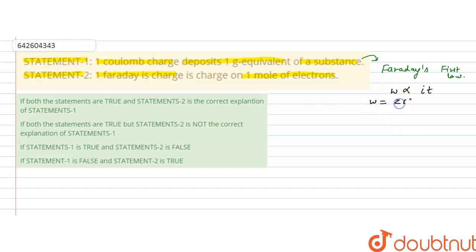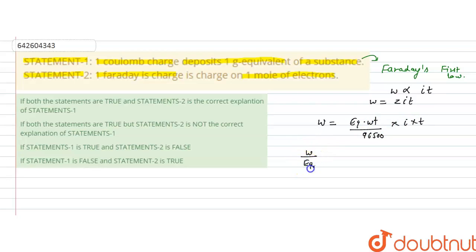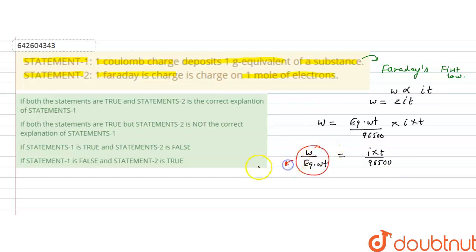The formula is w = z·i·t, where z is the electrochemical equivalent and it is equal to the equivalent weight divided by 96500, into current into time. So w divided by equivalent weight equals current into time upon 96500, and this equals the number of equivalents, since weight upon equivalent weight is the number of equivalents.